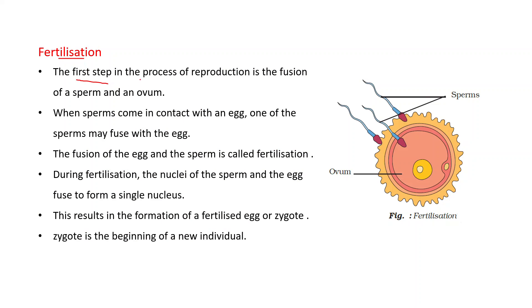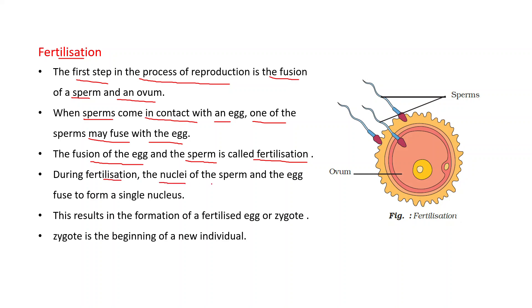The first step in the process of reproduction is the fusion of a sperm and an ovum. In the previous video we discussed how sperm and ovum are produced. When sperms come in contact with an egg, one of the sperms may fuse with the egg. The fusion of the egg and the sperm is called fertilization. During fertilization, the nuclei of the sperm and the egg fuse to form a single nucleus.